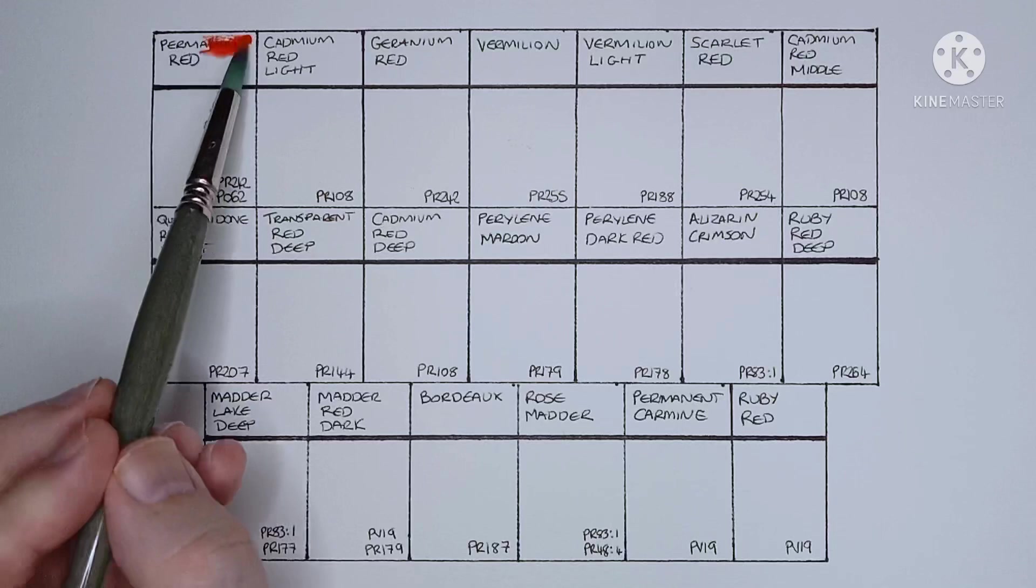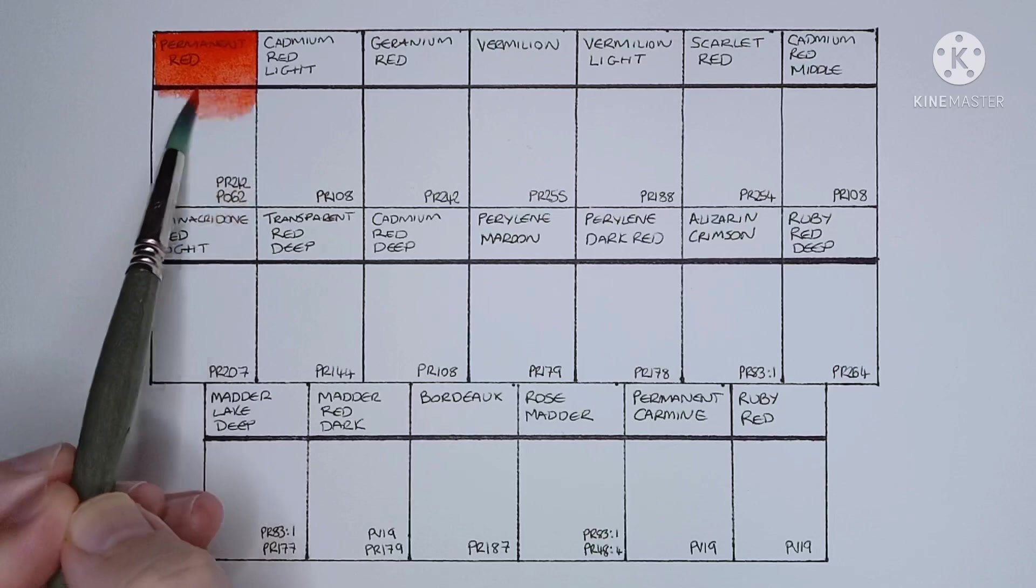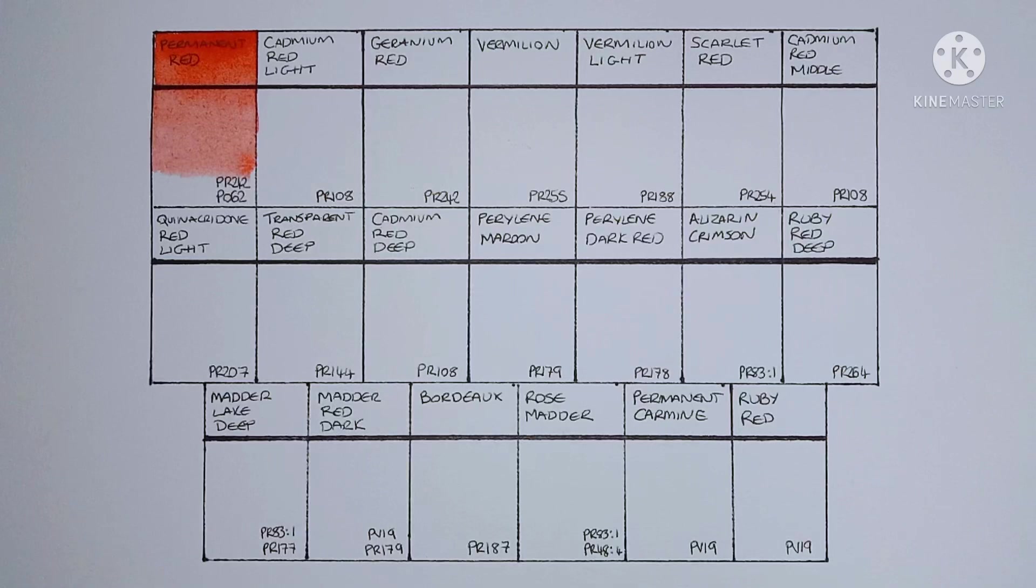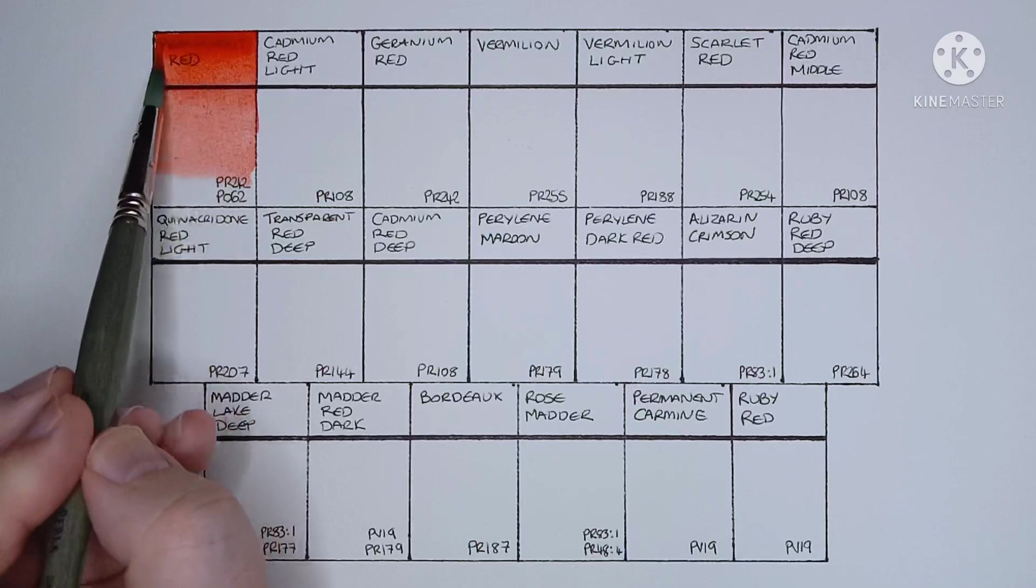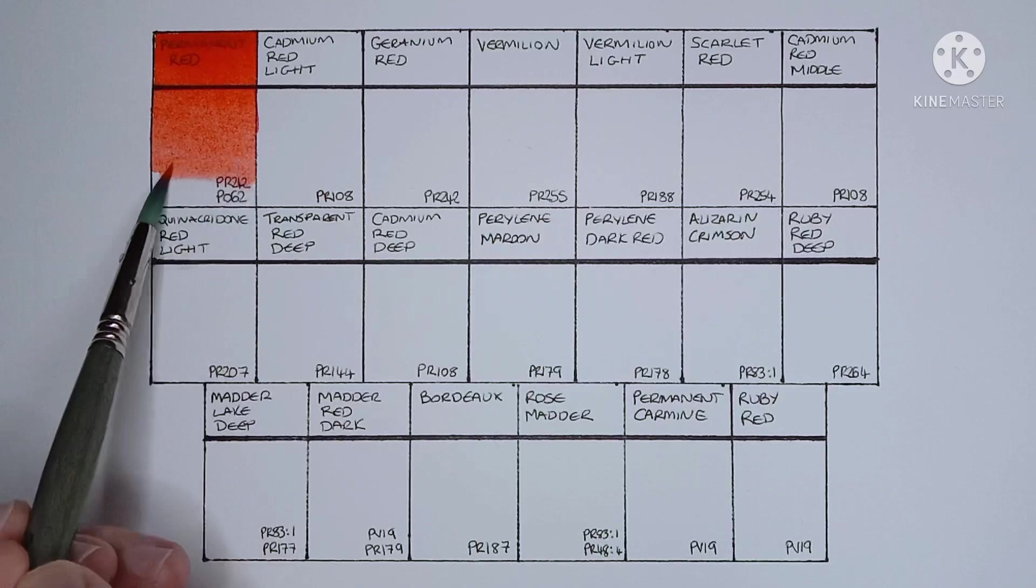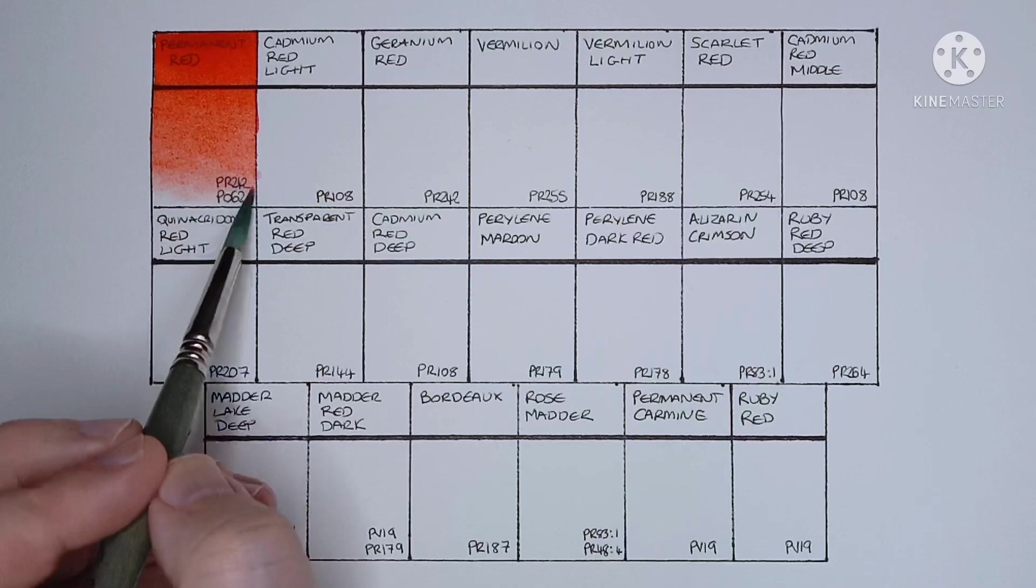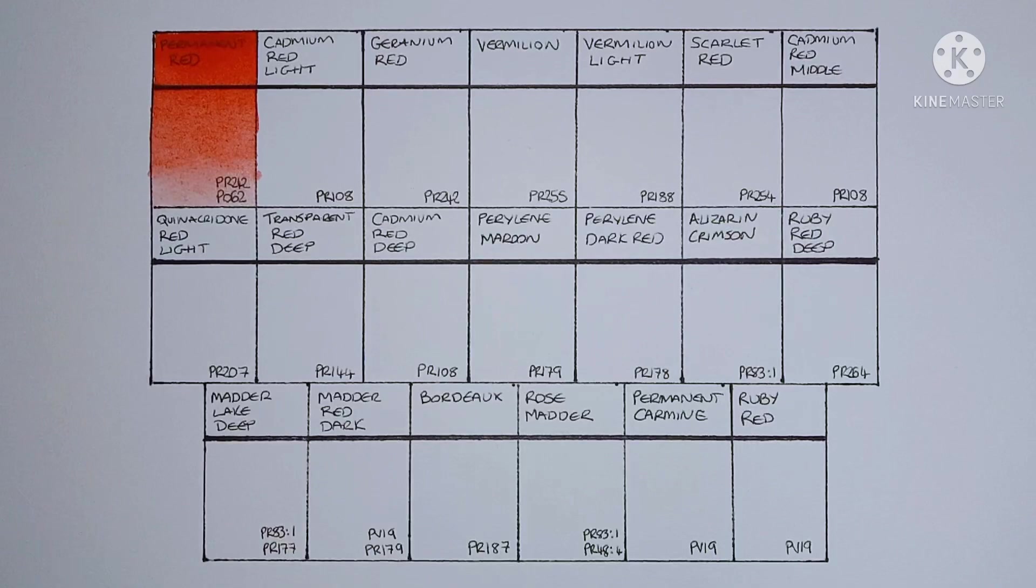So first up we have Permanent Red. This is a two pigment mix of PR242 and PO62. Yeah, it looks like a really nice orange red to me. It reminds me a lot of the cadmium red lights that I like to use. Yeah, it's actually really nice.